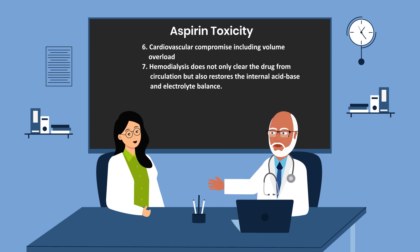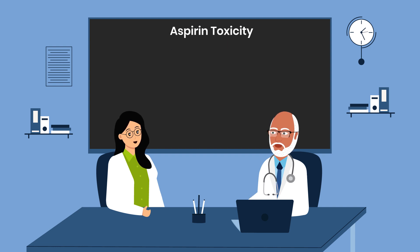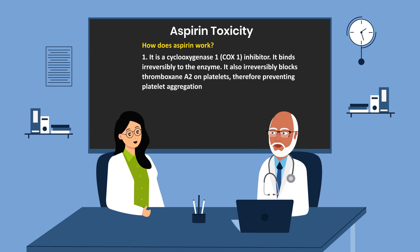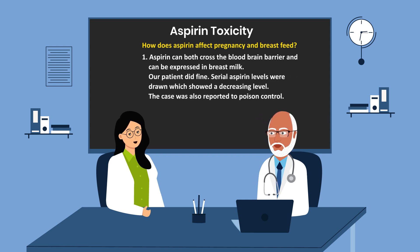Where is salicylate derived from? It is derived from the willow tree bark. How does aspirin work? It is a cyclooxygenase, or COX-1, inhibitor. It binds irreversibly to the enzyme and also irreversibly blocks thromboxane A2 on platelets, therefore preventing platelet aggregation. How does aspirin affect pregnancy and breastfeeding? Aspirin can both cross the blood-brain barrier and can be expressed in breast milk.